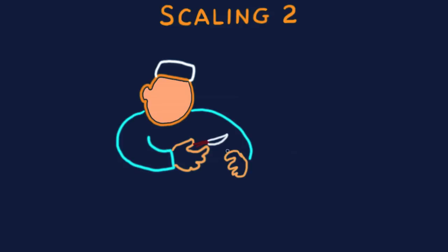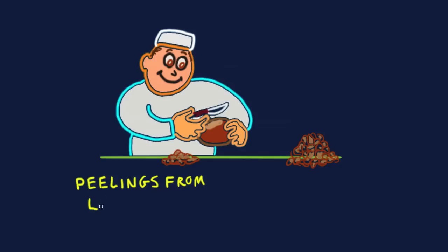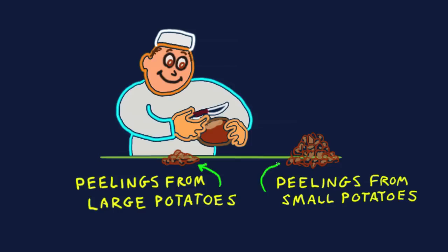How does knowledge of scaling aid a cook in the kitchen? A good cook intuitively knows that larger objects have less surface area per volume than smaller objects. He knows that less potato peelings result from peeling 5 kilograms of large potatoes than from peeling 5 kilograms of small potatoes.